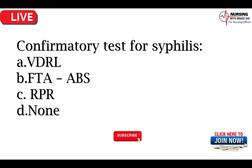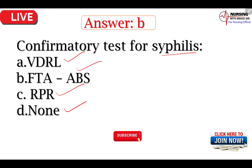Now we can proceed to the next question। Confirmatory test for syphilis। Syphilis के confirmatory test कौन सा है? A option में VDRL, B option में FTA-ABS, C option में RPR, D option में none of the above। So put the right answer। तो यहाँ पर answer हो जाएगा B option।